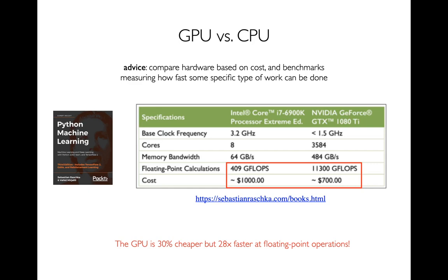Depending on what your benchmark is doing and what kind of work you're trying to measure, maybe one device or the other might be better. For a lot of this heavy computational machine learning stuff — matrix multiplications, that kind of thing — what we really care about is number crunching. More formally, what we care about is doing floating point operations. We're going to be dealing with lots of floats, so how many operations — like additions, multiplications — can we do per second? We can run benchmarks and evaluate both these hardware platforms. The CPU gets 409 gigaflops — giga meaning billion — floating point operations per second. And if I look at the GPU, that's about 28 times more. So the GPU is way faster.